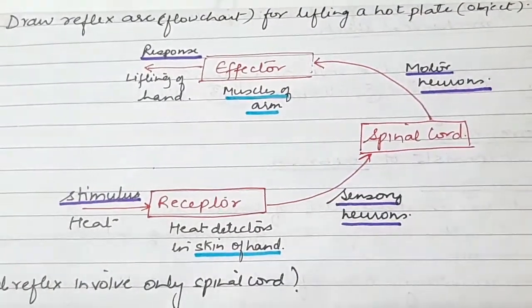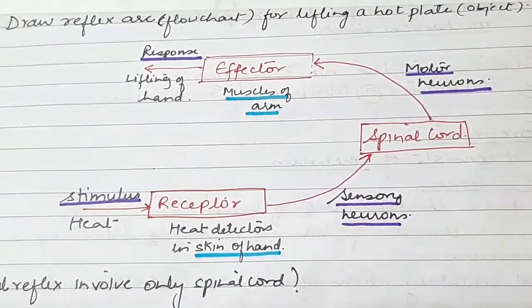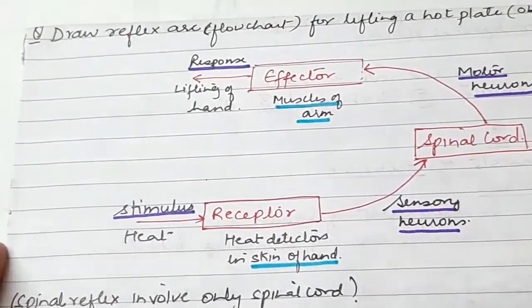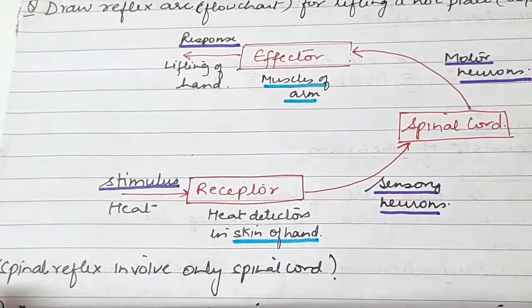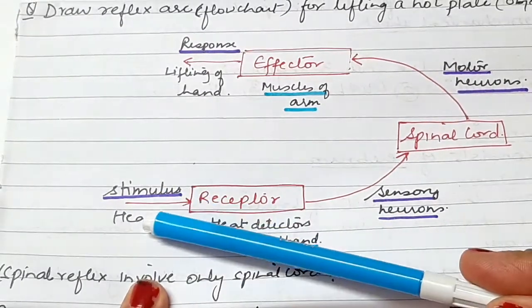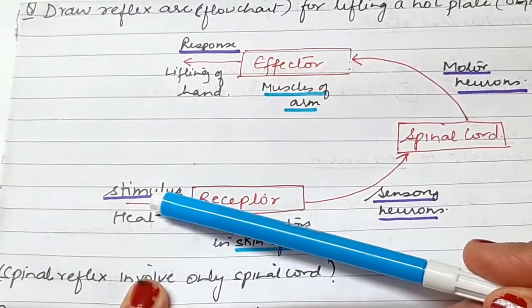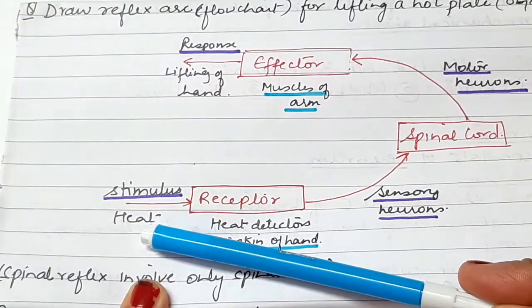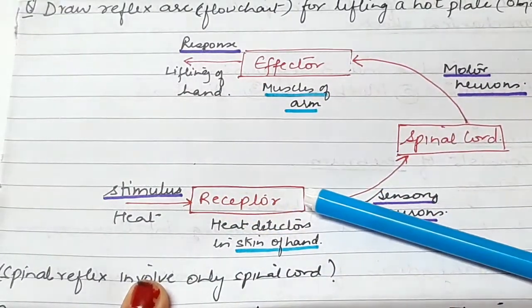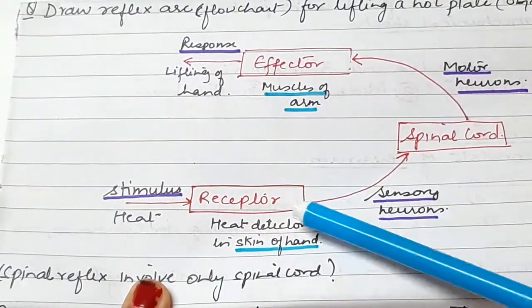If we have seen the previous diagram for the reflex arc, we can see the flowchart in this form. So the stimulus was the hot object - the stimulus was heat. Now the receptor was the skin of our hand.